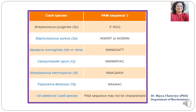Different bacteria have different Cas9 genes and they recognize different PAM sequences. These are different Cas9 species shown here.